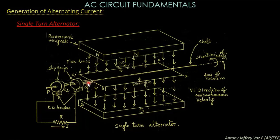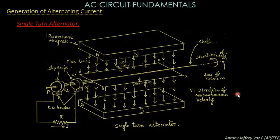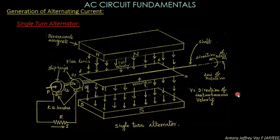This EMF is transferred to the slip ring, and from the slip ring it is transferred to the brushes, and from the brushes it is going to power the resistor present in the external circuit. This is the complete setup of the single turn alternator. Let us study how this alternator will generate power in each step.